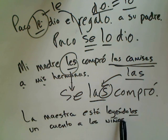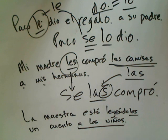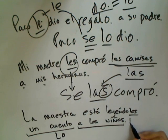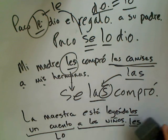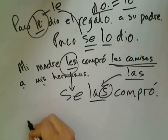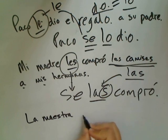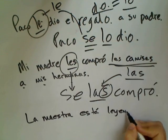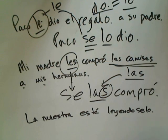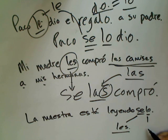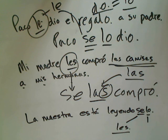Final example: LA MAESTRA ESTÁ LEYÉNDOLES UN CUENTO A LOS NIÑOS — the teacher is reading a story to the children. The direct object pronoun for a story would be LO; the indirect object pronoun for to-the-children would be LES. To say 'the teacher is reading it to them': LA MAESTRA ESTÁ LEYÉNDOSELO — SE comes from LES representing A LOS NIÑOS, and LO comes from EL CUENTO.